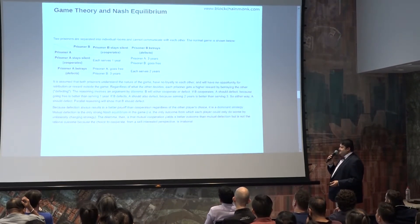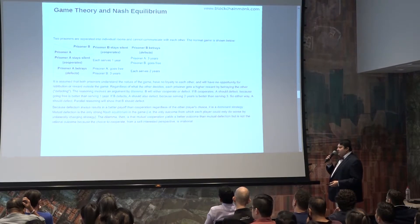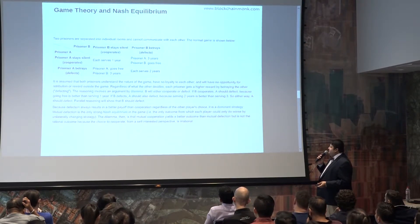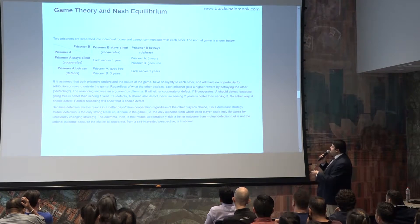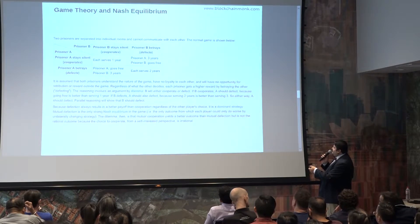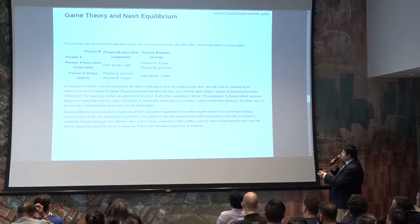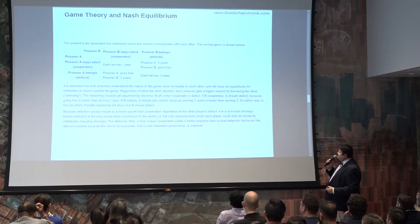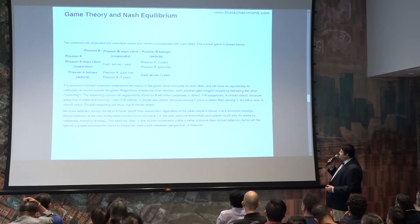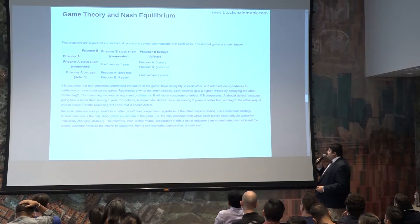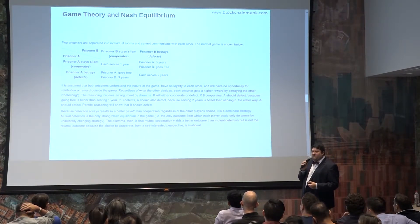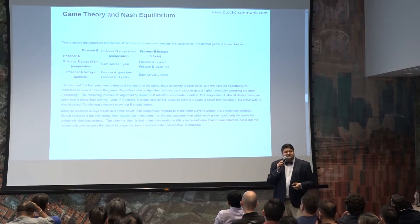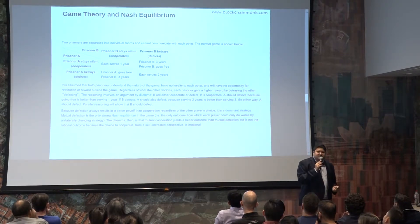In situation two, prisoner A betrays — he goes and tells the police that prisoner B was the culprit and then walks free. Prisoner B gets three years. In scenario four, in the right quadrant, each serves two years because prisoner A betrays prisoner B and prisoner B betrays prisoner A. The dominant strategy in this game is for the prisoners to betray each other because they don't want a jail term.